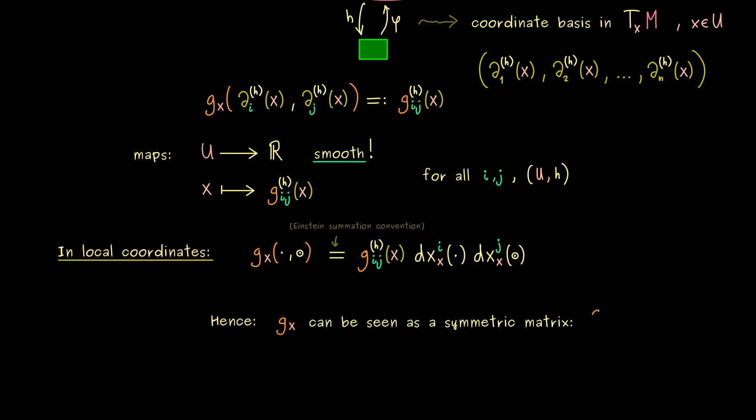Moreover, it has to be a symmetric matrix. And then the entries of the matrix capital G are just given by these numbers here. So please keep that in mind because in calculations one often uses this symmetric matrix instead of the abstract inner product. This is not a problem at all because the information inside is exactly the same.